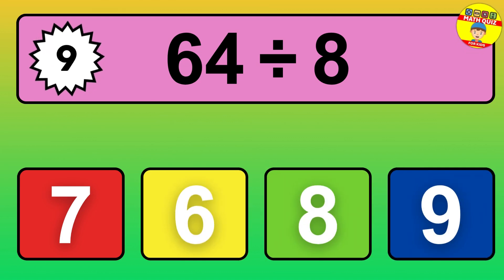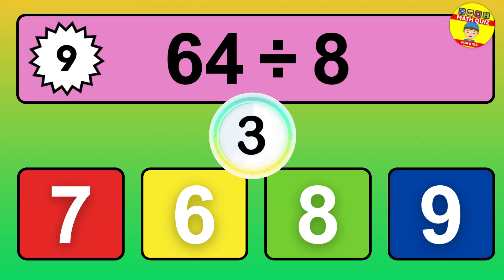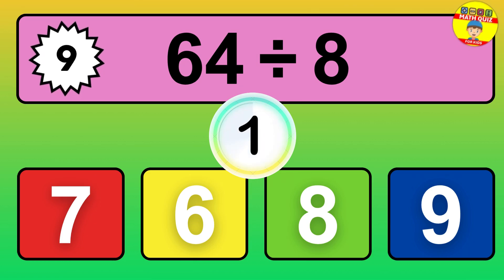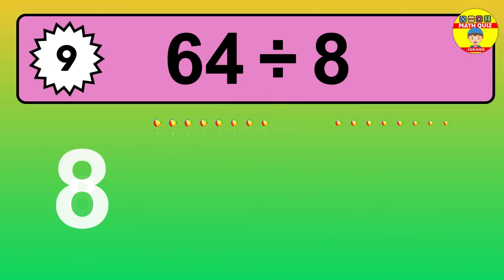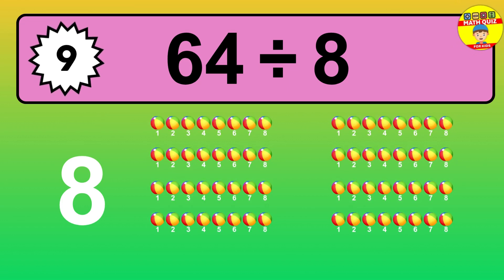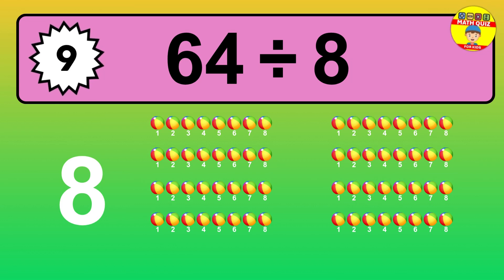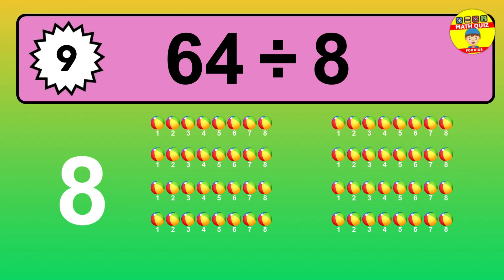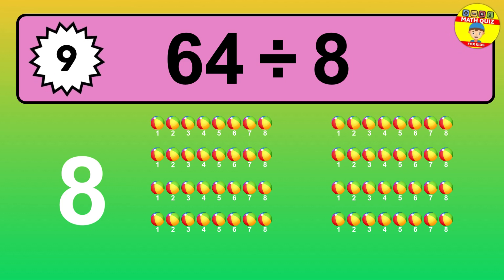64 divided by 8 — time to think! Let's go to the solution. Divide the number 64 by 8. Each group contains 8 units, so dividing 64 by 8 results in 8 equal groups. Thus, the result is 64 divided by 8 equals 8.